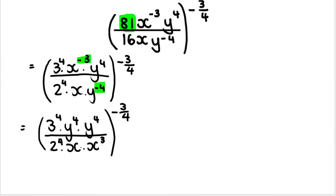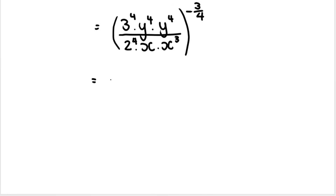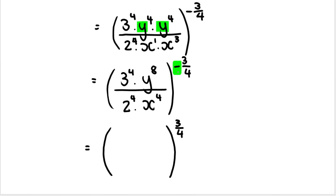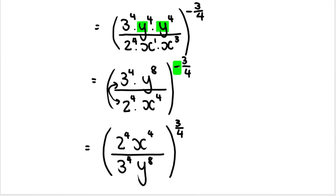Now simplify what's inside the bracket. Upstairs: three to the power of four stays; Y to the power of four multiplied by Y to the power of four — same base, add exponents, gives Y to the power of eight. Downstairs: two to the power of four stays; X to the power of one multiplied by X to the power of three — add exponents. Then, since we have a negative exponent outside, we change it to positive three over four and flip the fraction: two to the power of four and X to the power of four come to the top, while three to the power of four and Y to the power of eight go to the bottom.